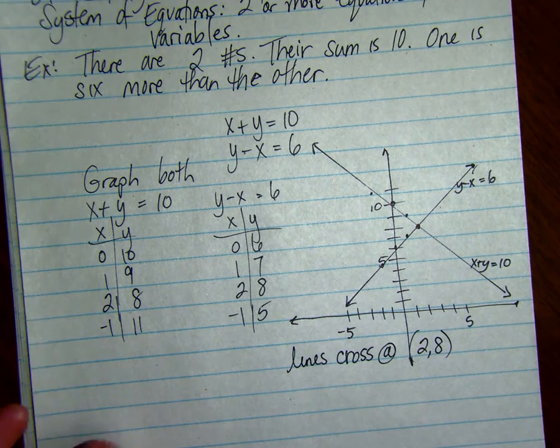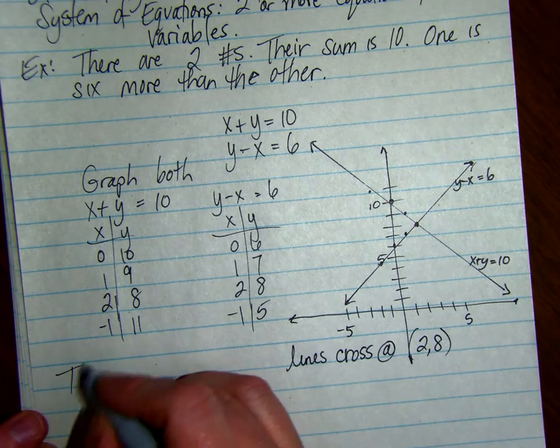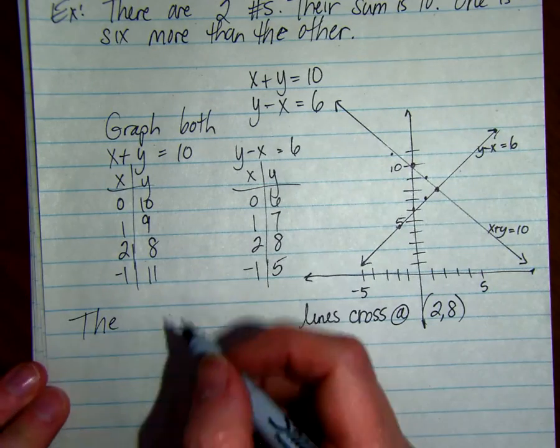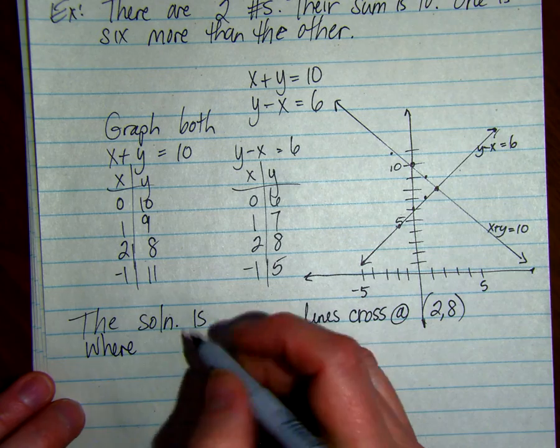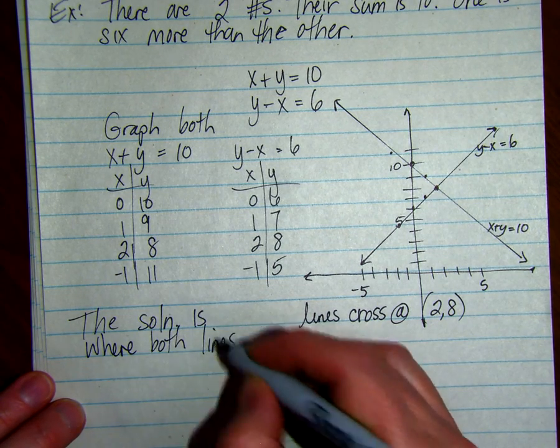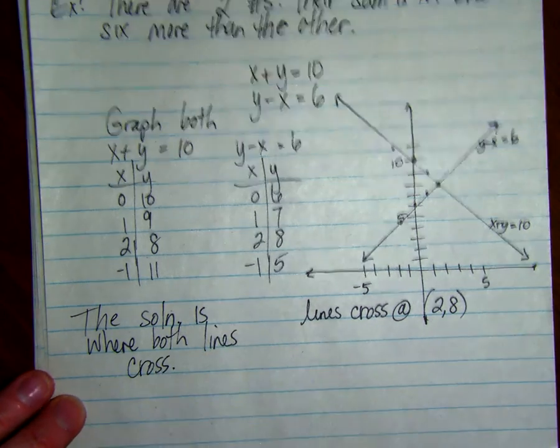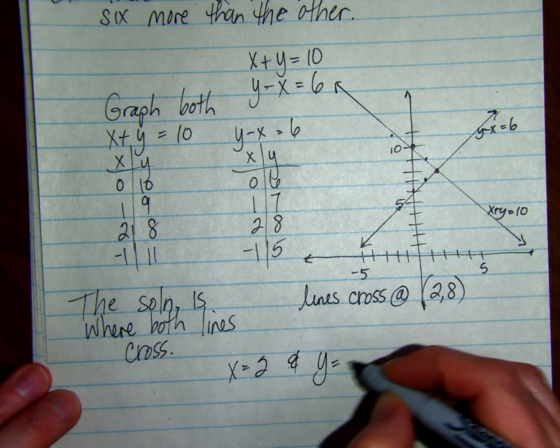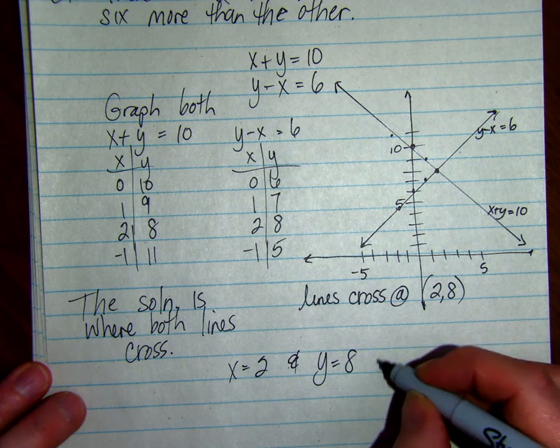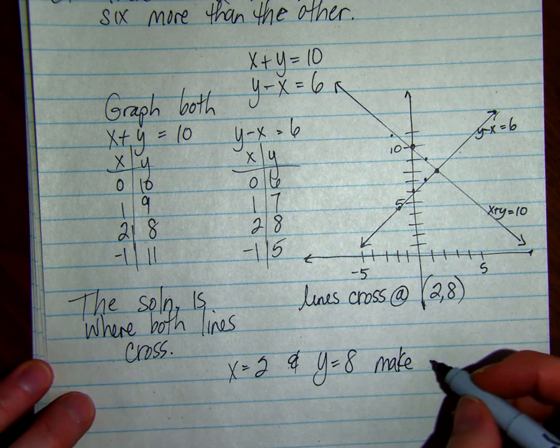The solution is where both lines cross. So when x equals two and y equals eight, it makes both equations true.